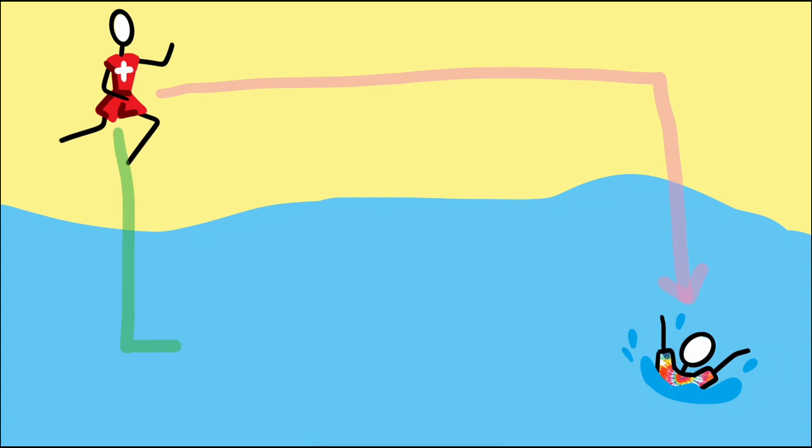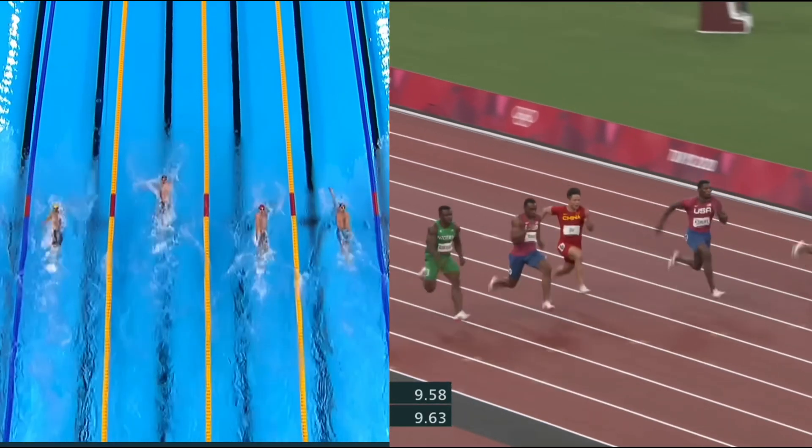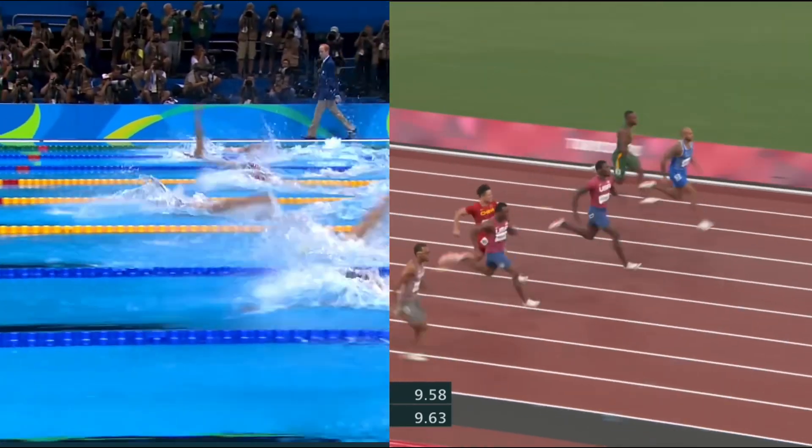She could get into the water as quickly as possible and then swim the rest of the way. If she swam as fast as she could run then it would make sense for her to travel in a straight line from her starting point to the swimmer. What makes this problem interesting is that like most swimmers, even very strong swimmers, her speed while running is faster than her speed swimming.